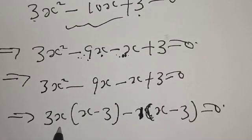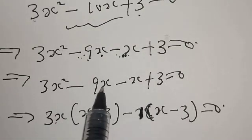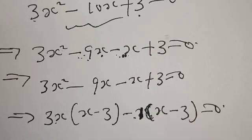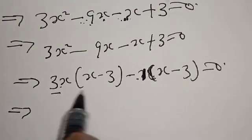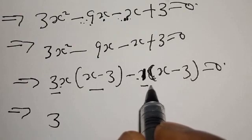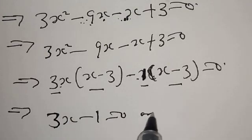Now let's factor by grouping. From the first two terms, factor out 3x to get 3x(x minus 3). From the last two terms, factor out minus 1 to get minus 1(x minus 3). This gives us (3x minus 1)(x minus 3) equal to 0.